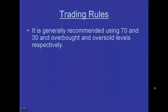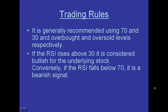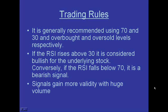It's generally recommended to use settings of 70 and 30. Some people use 80 and 20, often to stay consistent with stochastics. There is an overbought and oversold level. If the RSI line starts below 30 and rises above 30, it's now considered bullish for the stock. Conversely, when it's above 70 and drops below 70, that is considered a bearish signal. Both of these signals have more validity when confirmed with volume.